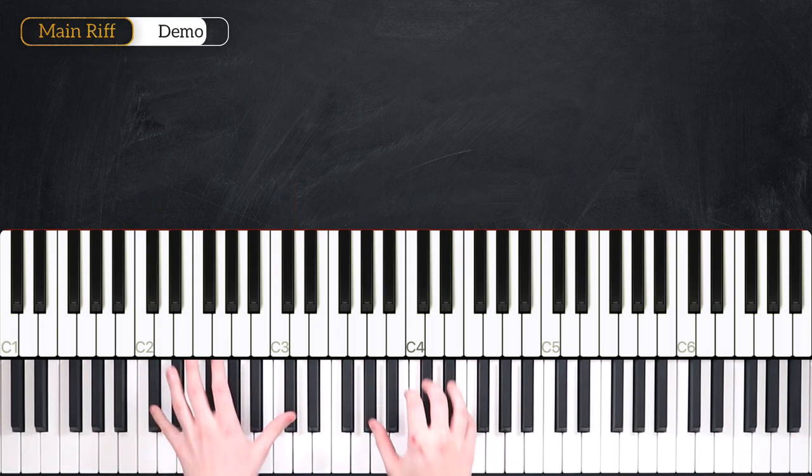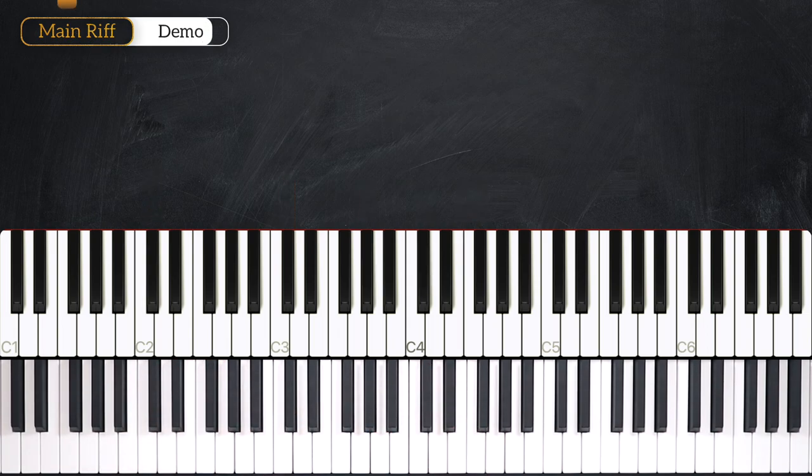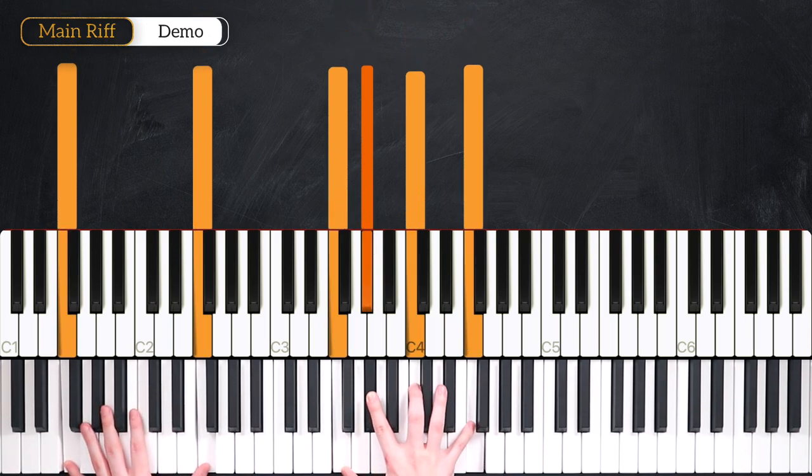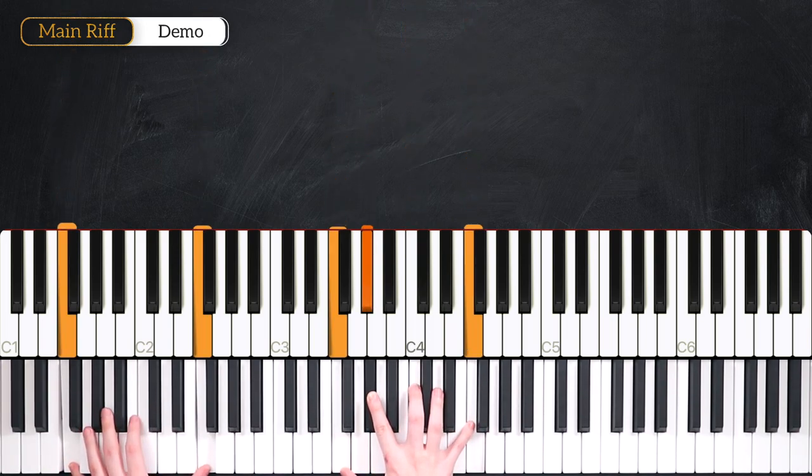Alright, that was the main riff. Let's head into the breakdown. We're in the key of F minor, and we've got four main chords to look at.